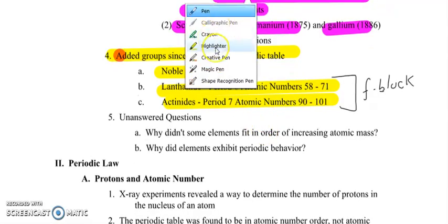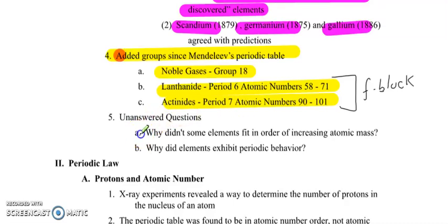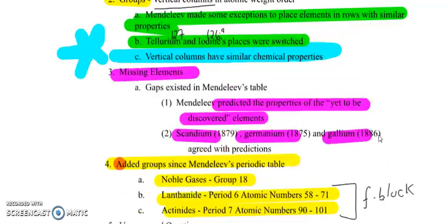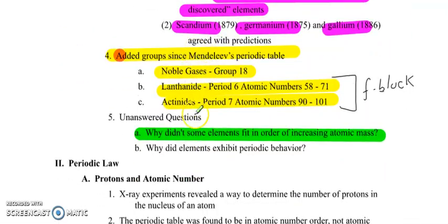There were some unanswered lingering questions. Why didn't some elements fit in order of increasing atomic mass? That's looking back at the tellurium and the iodine problem. And also, why? What was the underlying reason? Why did these elements exhibit the periodic behavior? We saw in the video, we had the octaves, every eighth element, things repeat. Why could that be?